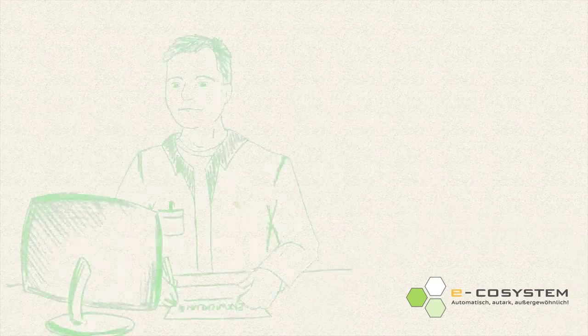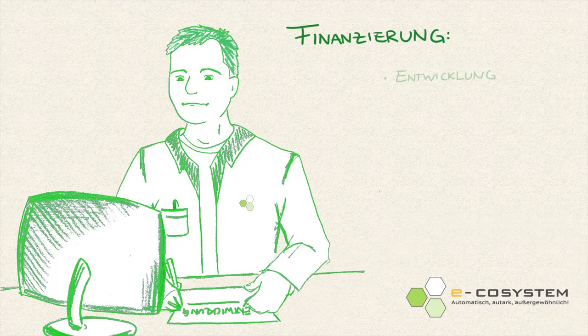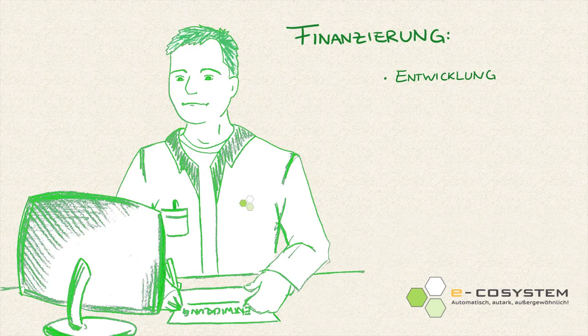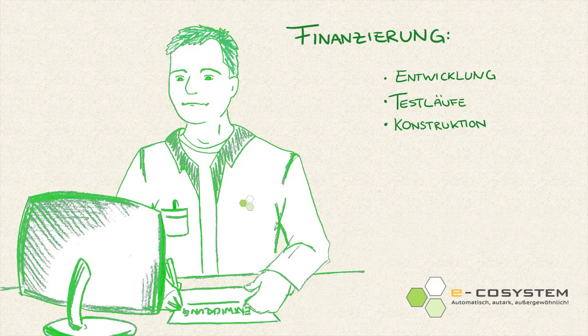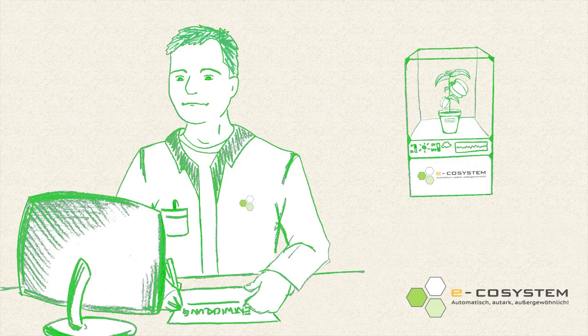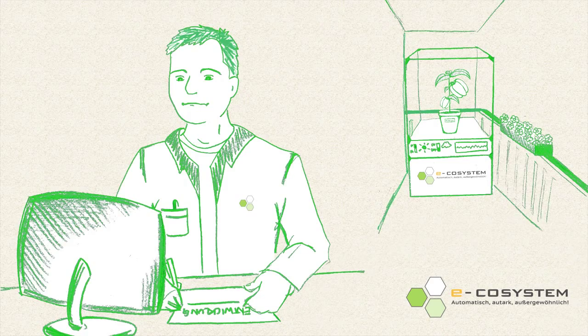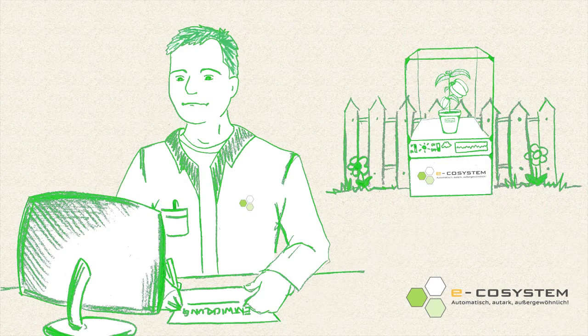The adventure of research should commence, but therefore Matthias needs your support. The ecosystem has to be developed. Proper test runs must be performed. The prototype has to be constructed and manufactured. The main purpose of all this is to create a system for everybody, which is easy to handle and can be set up for low cost on every little balcony or garden.